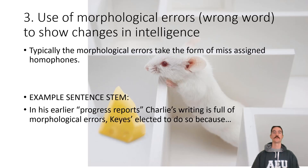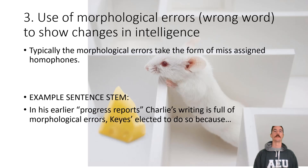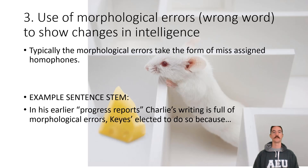Third is the use of morphological errors, which basically means the wrong word — morphology being the structure or choice of a word. Typically these errors take the form of misassigned homophones: words that sound the same, so Charlie uses the wrong word because it sounds correct. His spelling is based entirely on sounds rather than word recognition. Finish this off: 'In his earlier progress reports, Charlie's writing is full of morphological errors. Keyes elected to do so because...'